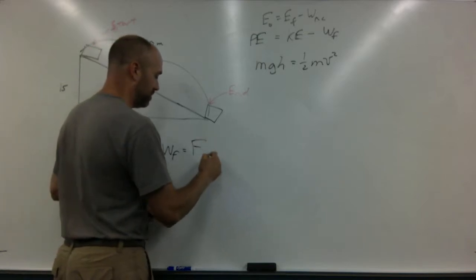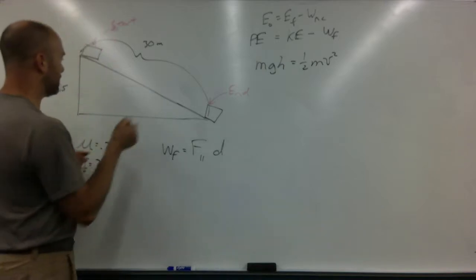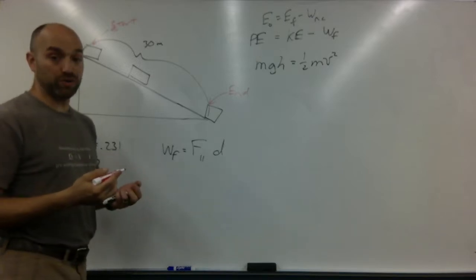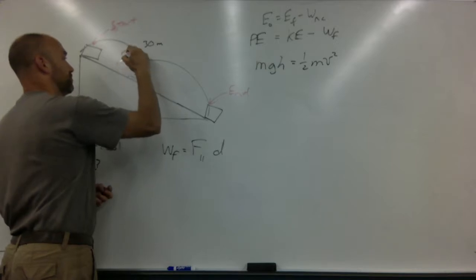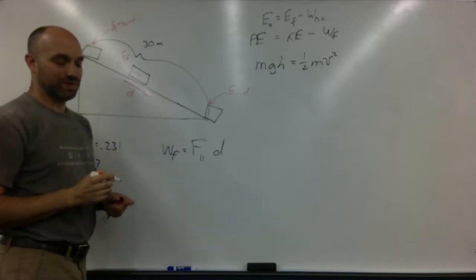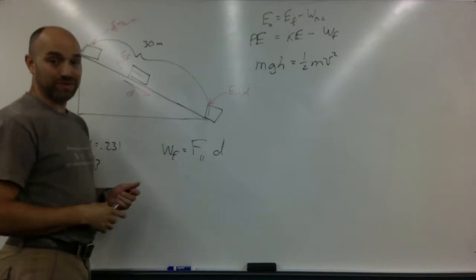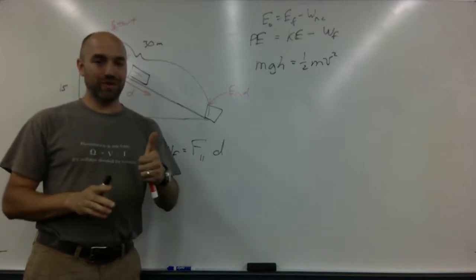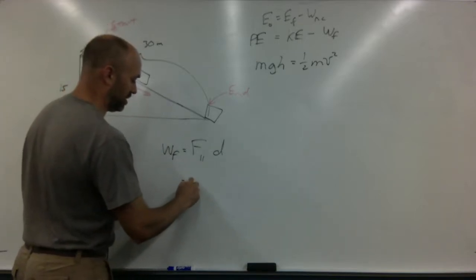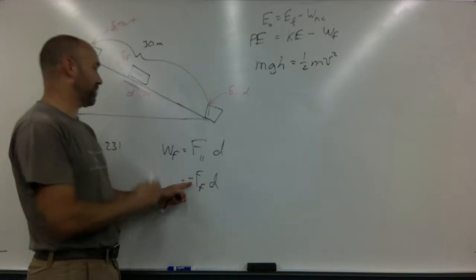Work, whether it's done by friction or something else, is always force times distance, and the two have to be parallel. As this box is sliding down the incline, which way does the force of friction act? Opposite — friction always opposes motion. The friction force points up the incline; the box is moving down. Are those parallel? They're anti-parallel. That'll still work, but if it's anti-parallel, you've got to put in a negative sign. So this becomes negative — the force of friction times the distance that it moves. The negative comes from the fact that they're anti-parallel.